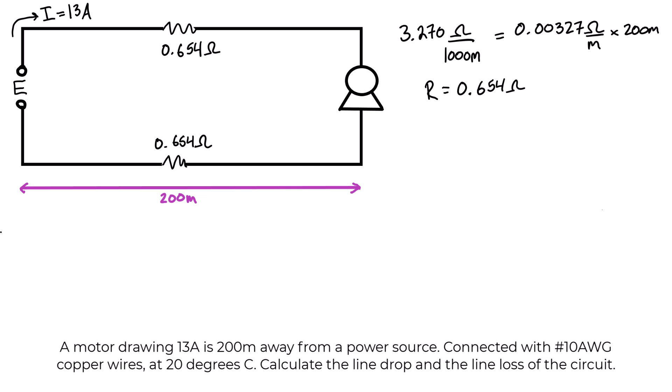If you're not given this number 3.270 ohms per thousand meters, you might be given other table values or expected to know other table values. The alternative way to get to this answer would be to know this equation where resistance equals resistivity times the length of the conductor divided by the cross-sectional area. Maybe this formula looks familiar, or maybe some of these values have been provided, or you're expected to know the resistivity of copper at 20 degrees Celsius or the cross-sectional area of certain AWG sizes.